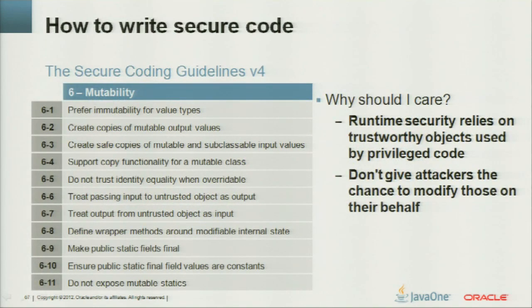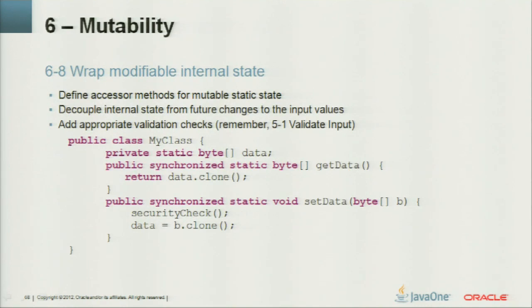Sixth: mutability. Prefer immutability. Create copies of mutable output values, create copies of mutable and subclassable input classes, and support copy functionality — you want to rely on trustworthy objects in privileged code. Don't give attackers the chance to modify those objects on their behalf. Don't expose mutable statics. Write 'robbers' (defensive copies) that prevent invariants from being changed and decouple the internal state from future changes to input values. Clone and add appropriate validation checks.